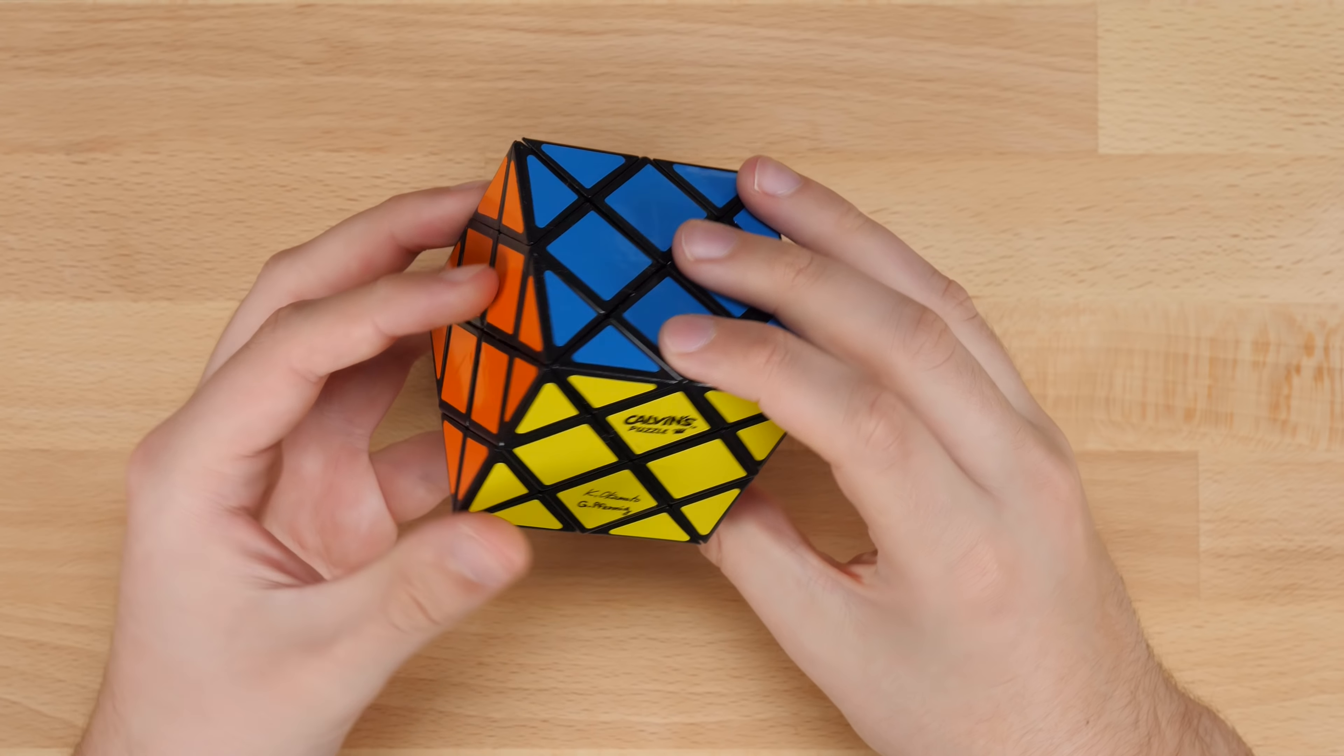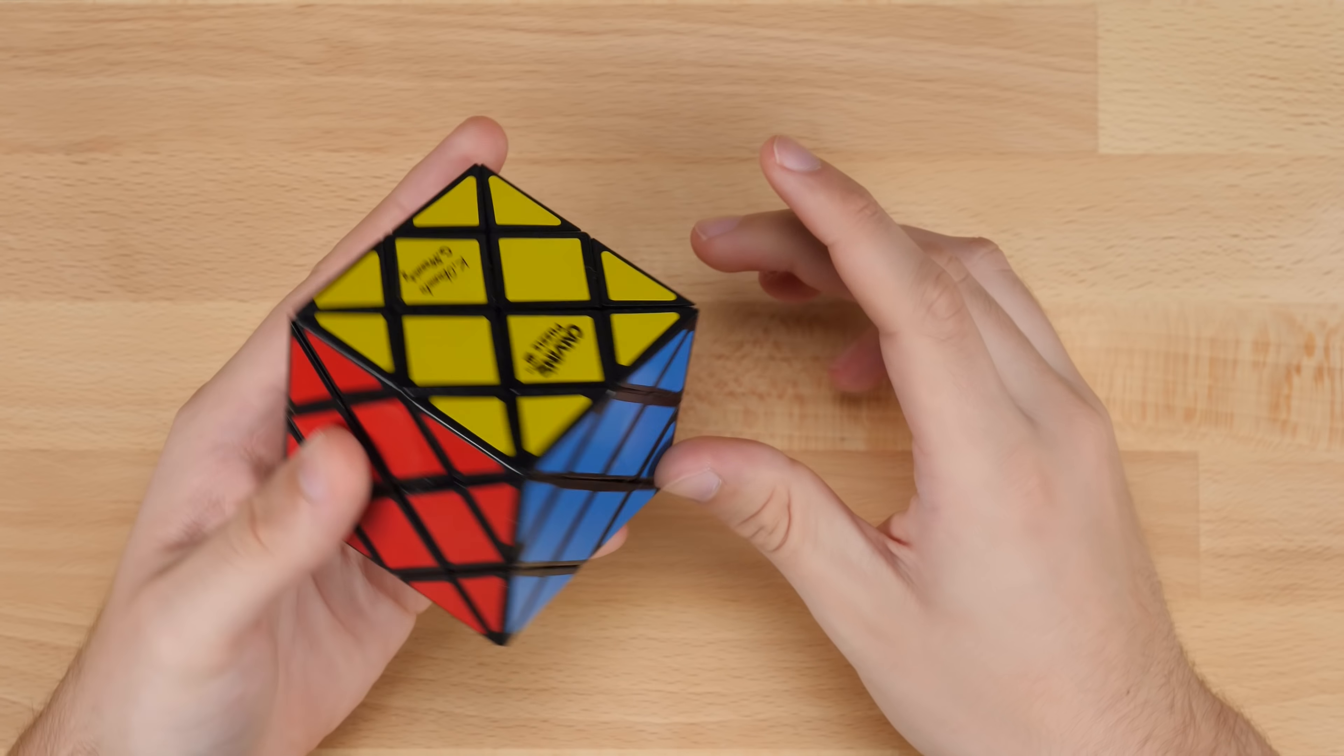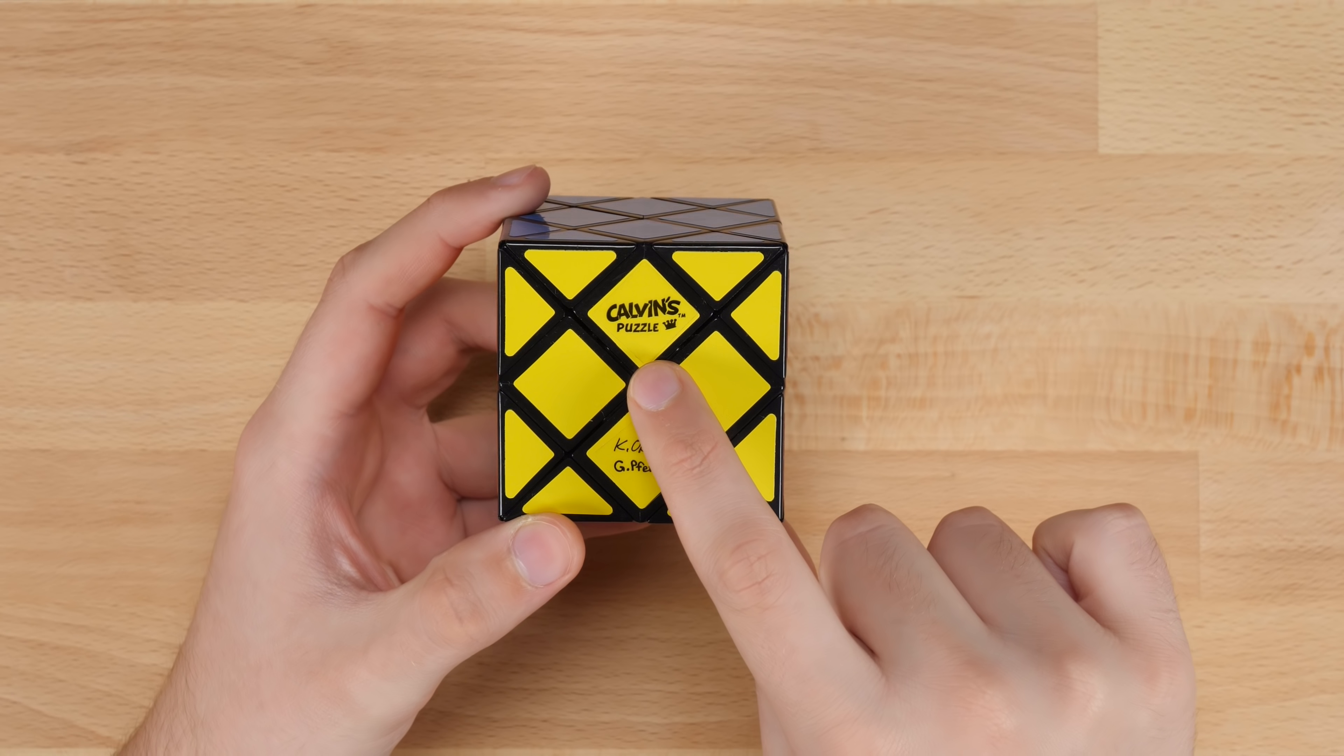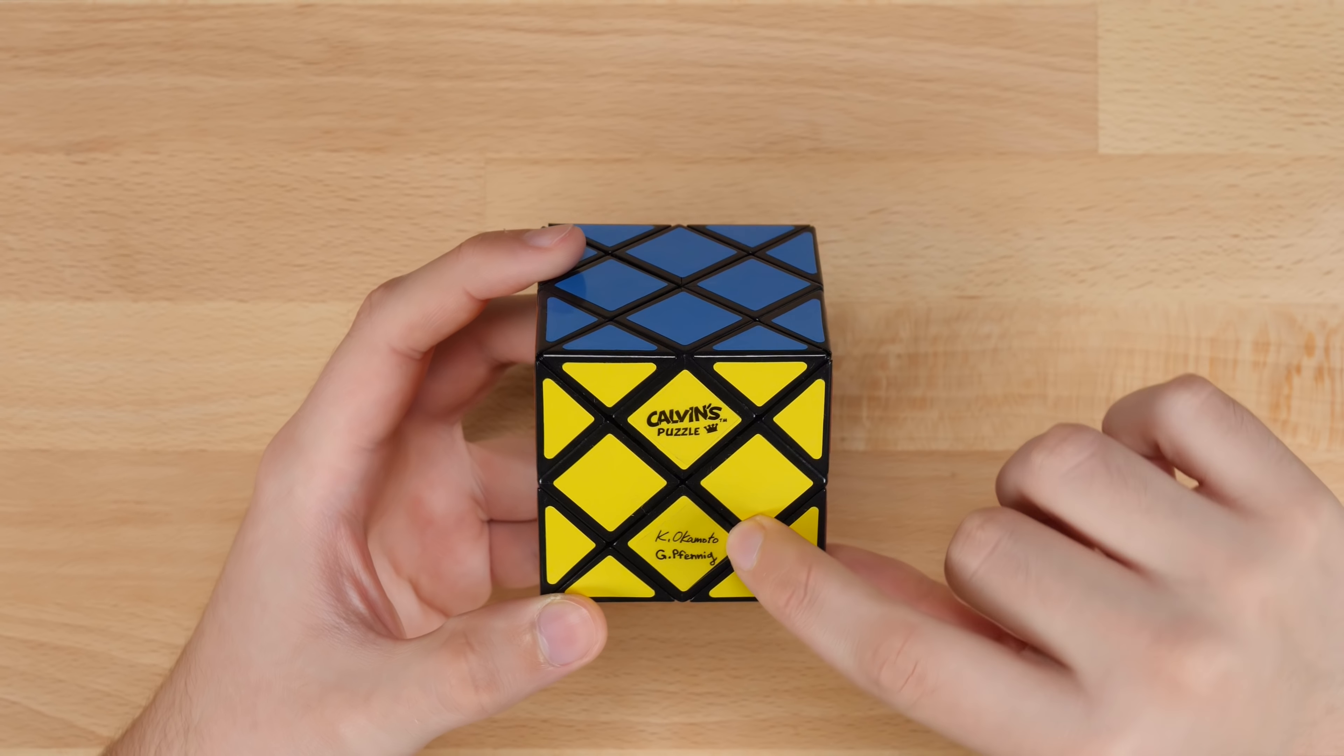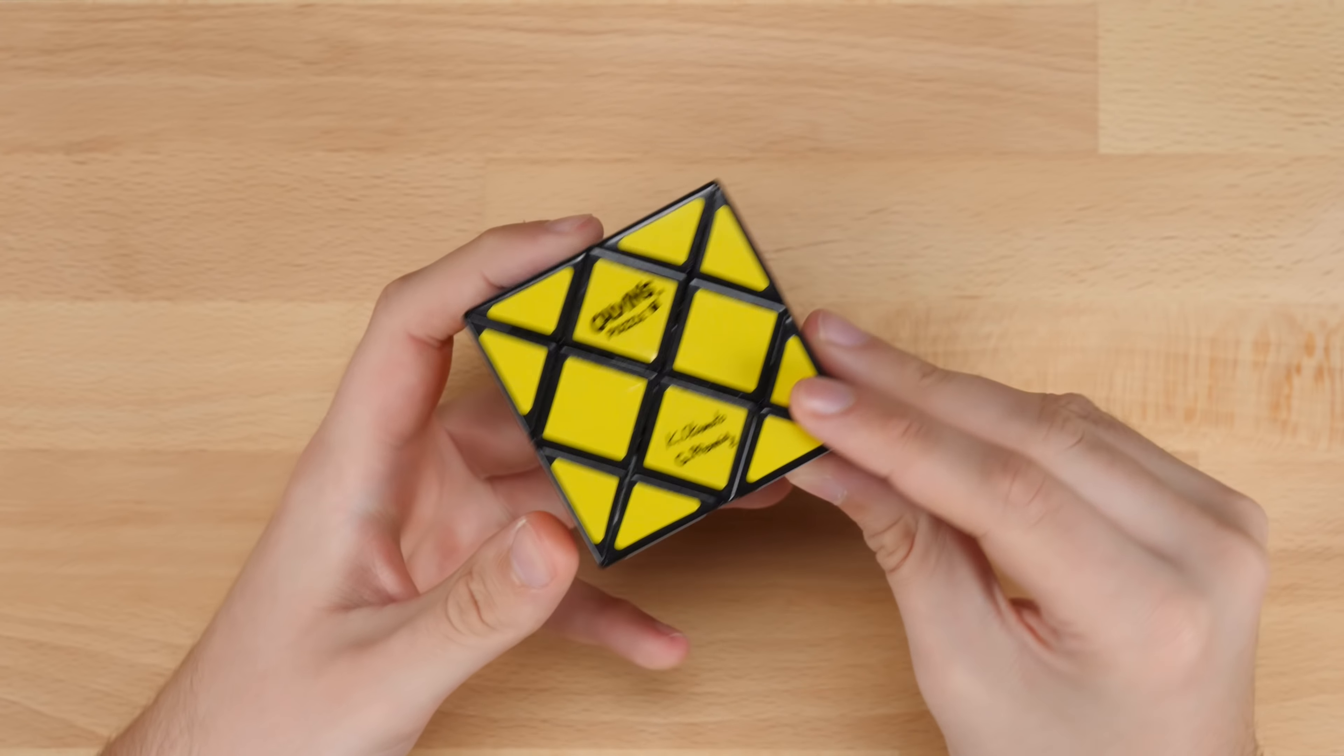The first thing you'll notice about it is the strange color scheme. It's got kind of a Japanese type color scheme. As you can see, it has the Calvin's puzzle logo and then the Katsuiko Akimoto signature and Gregoire Fenning's signature there. So those are the two designers of this puzzle.